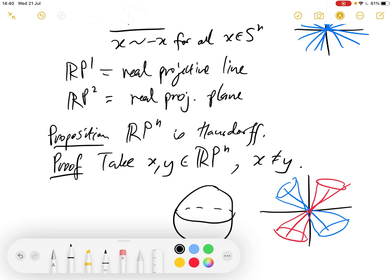So now we're gluing together antipodal points. So these two points here are both in the equivalence class of x. And if we have two red points here, these are both in the equivalence class of y.